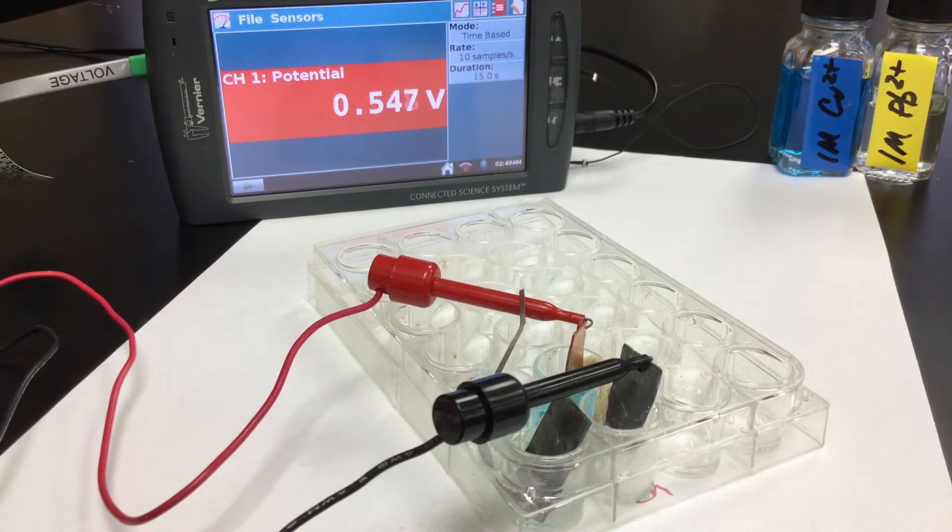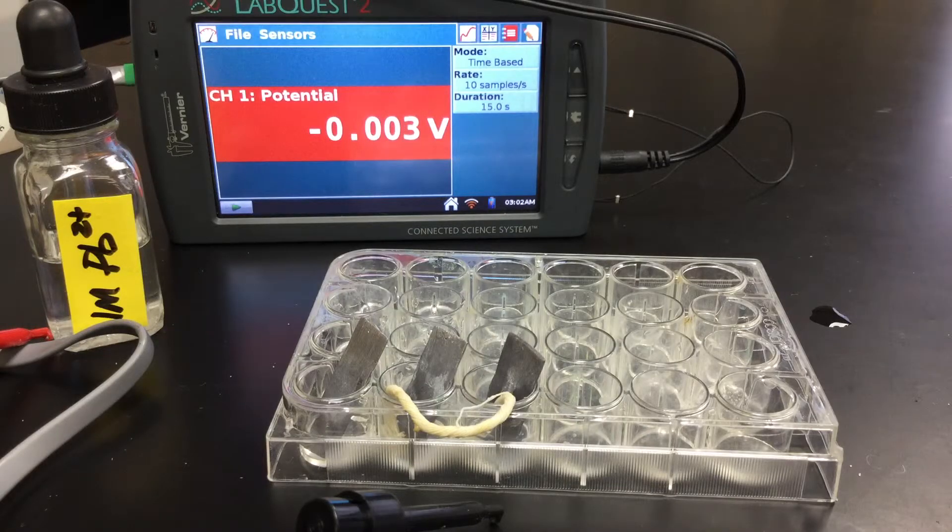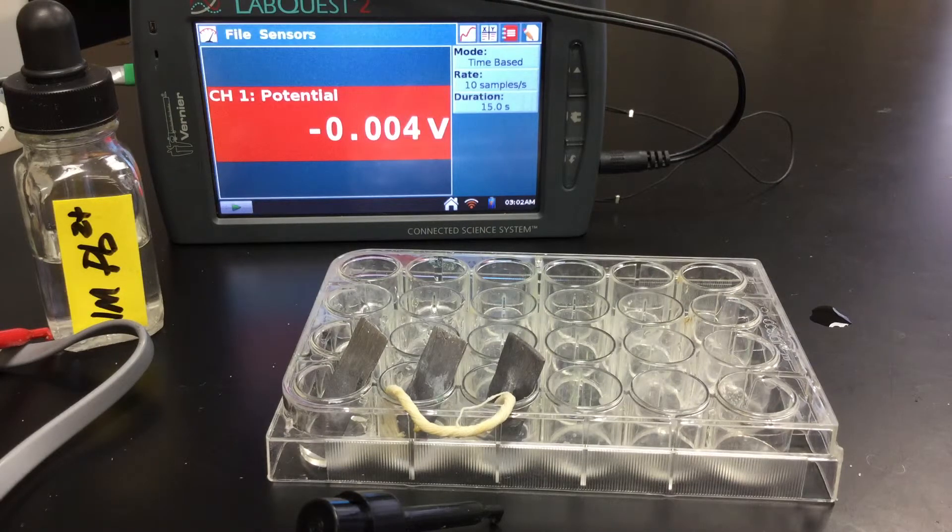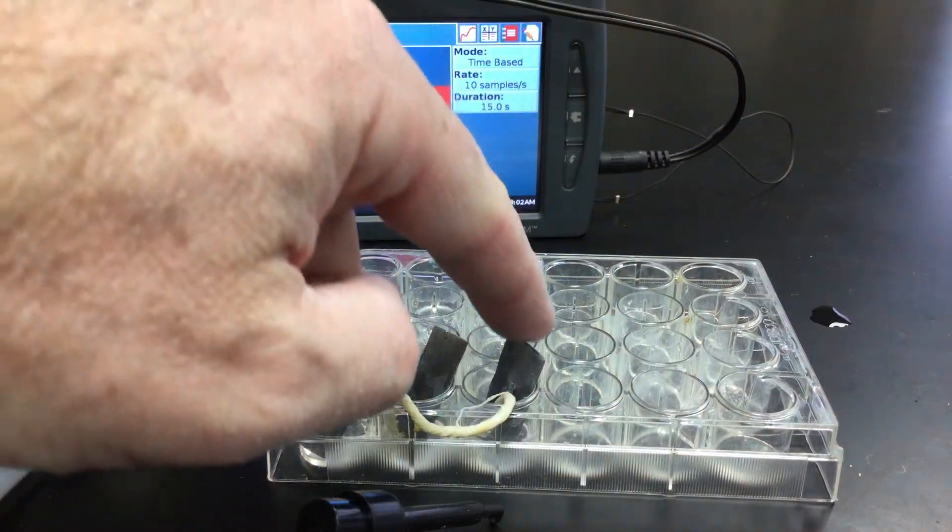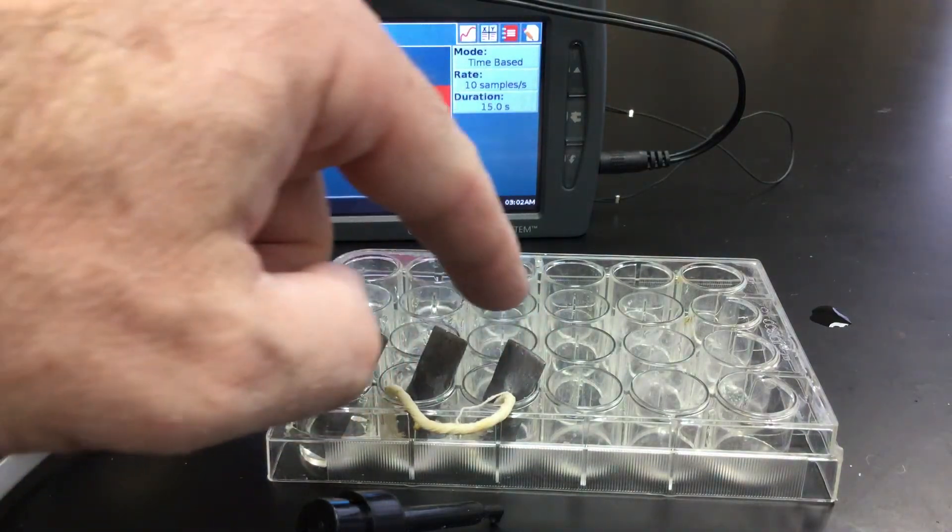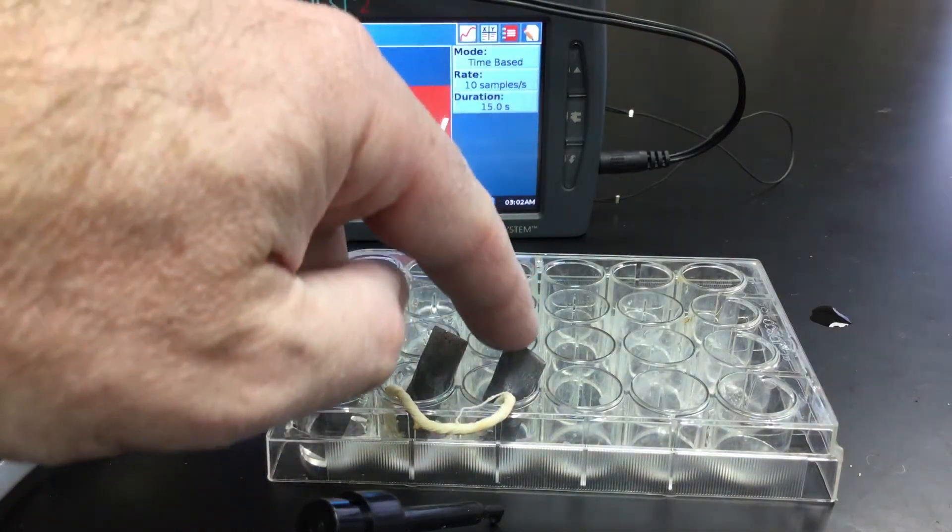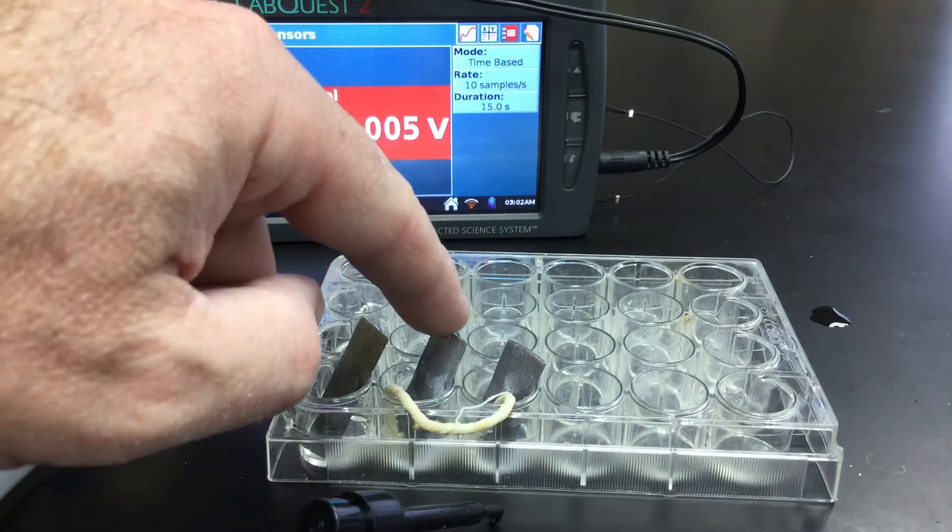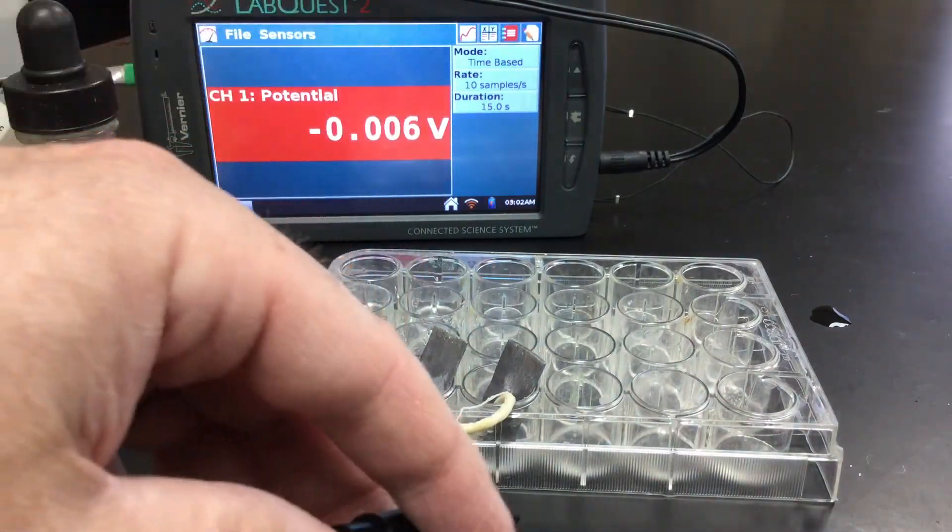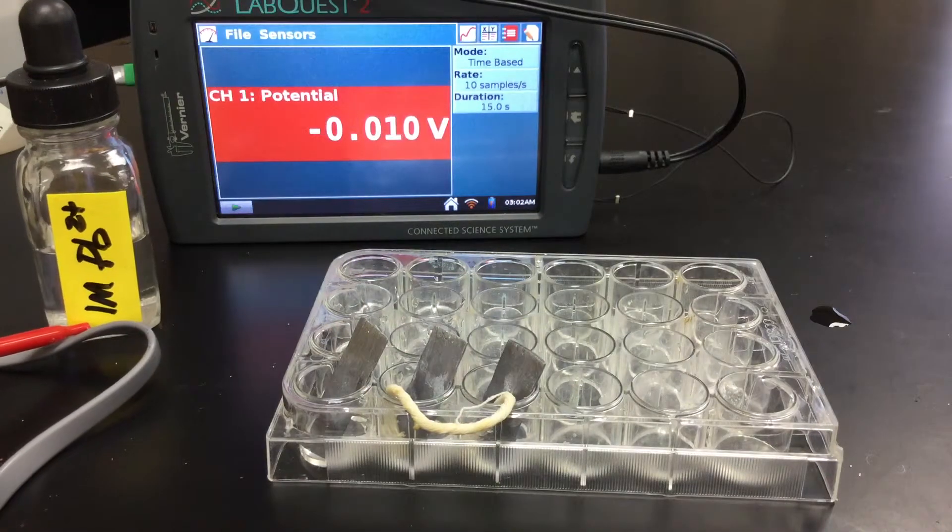Alright, thanks for watching. Alright, the last part of your lab was to make a concentration cell. And so that's what we've done. So in the well on the right, so these are all pieces of lead and then these are all lead solutions. But this lead solution is 0.001 molar and this is a one molar solution. We've got our salt bridge in there.